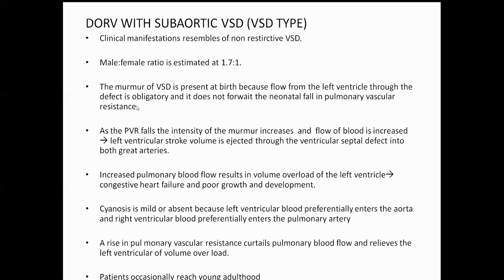As PVR falls, the intensity of the murmur will increase, the flow of blood will also increase, leading to increased left ventricular stroke volume through the VSD into both great arteries. Increased pulmonary blood flow increases volume in the left ventricle, leading to congestive heart failure. For the TGA-like case, cyanosis is mild or absent because left ventricular blood essentially enters the aorta and right ventricular blood enters the pulmonary artery, maintaining near-normal circulation. A rise in pulmonary vascular resistance reduces pulmonary blood flow.